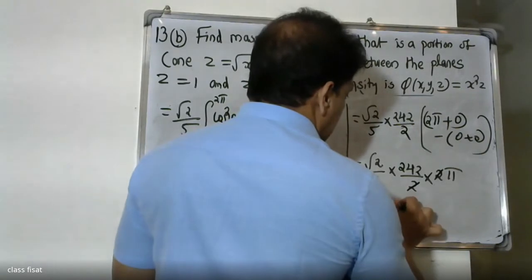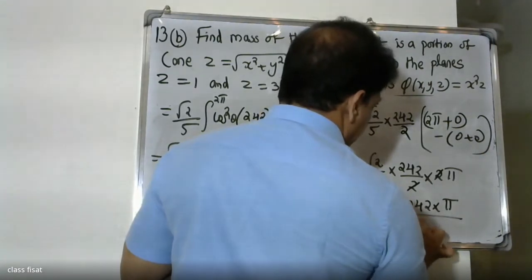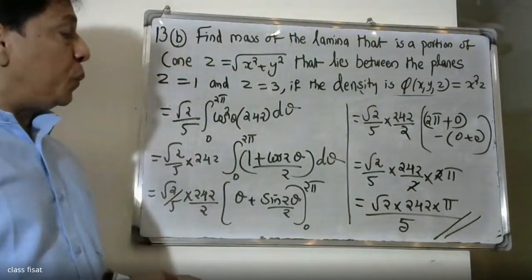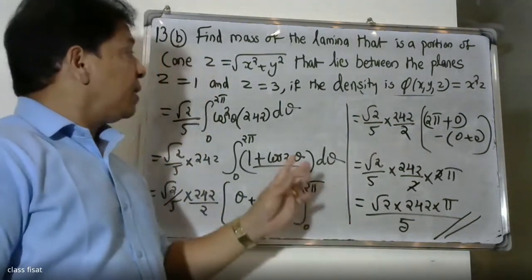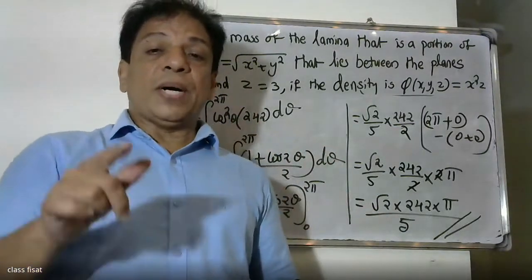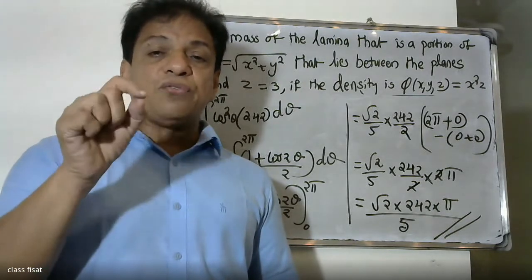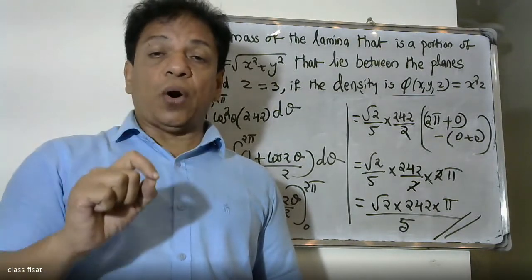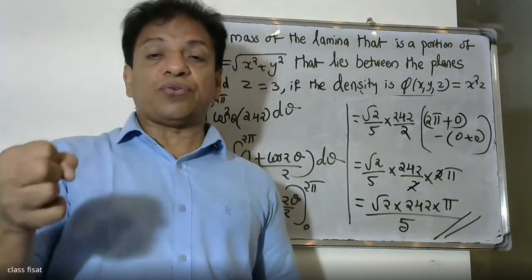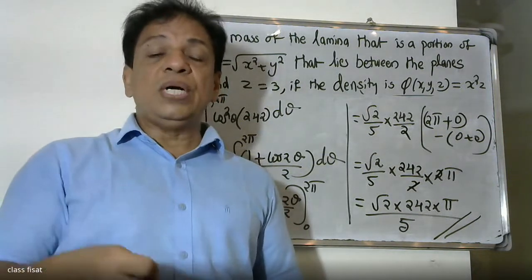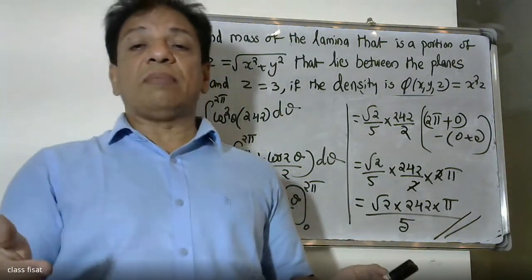Therefore the final answer is (√2/5) × 242 × π, which simplifies to 242π√2 / 5.